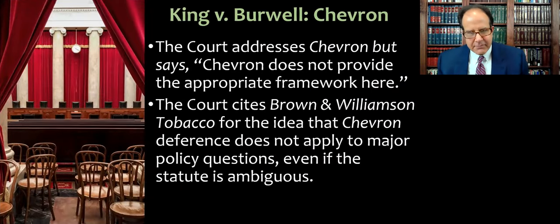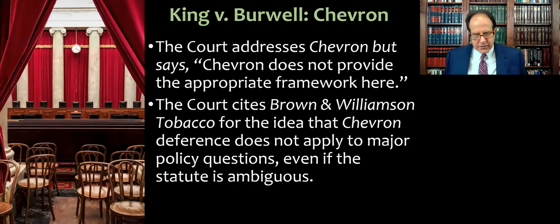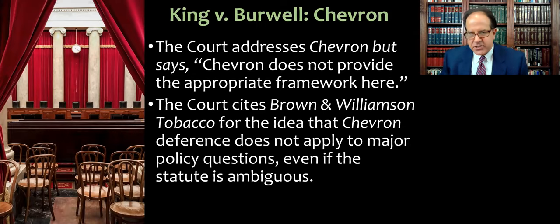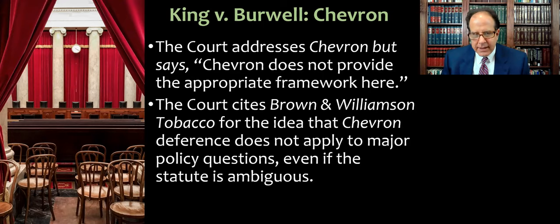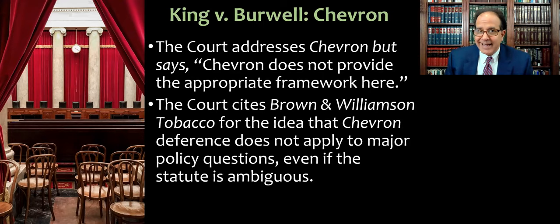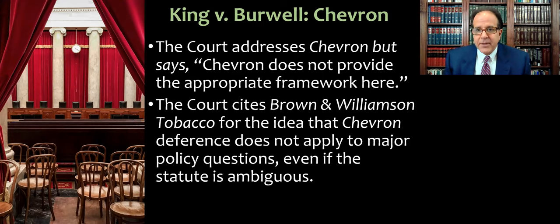The court at the beginning of the opinion addresses Chevron deference, because we have some agencies here — like the IRS and the Treasury Department — whose interpretation of a particular phrase about the exchanges is that either type of exchange counts for tax exemptions. The court acknowledges that we have a couple of agencies, primarily the IRS, who have an interpretation that normally the court would give Chevron deference to — if the agency has an interpretation of the statute it helps implement, courts usually defer to that agency because Congress intended that. But Justice Roberts says Chevron does not provide the appropriate framework here.